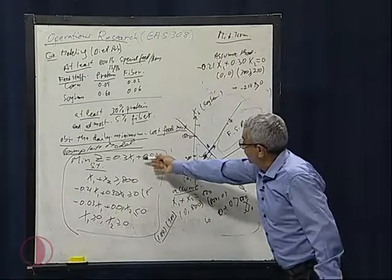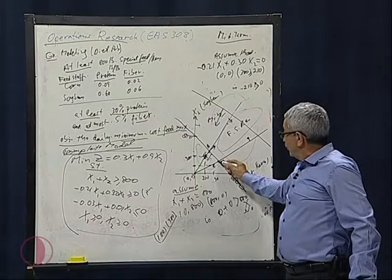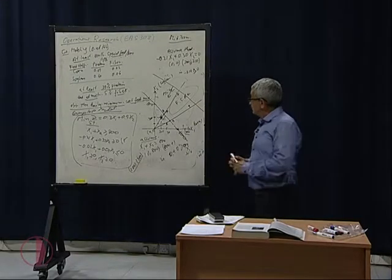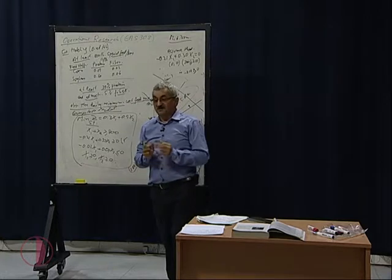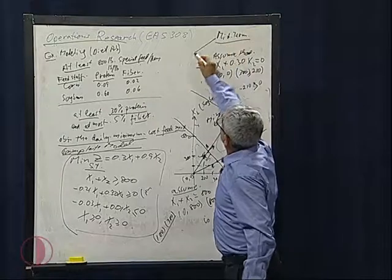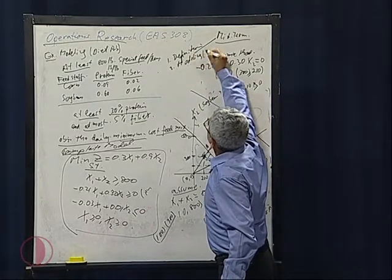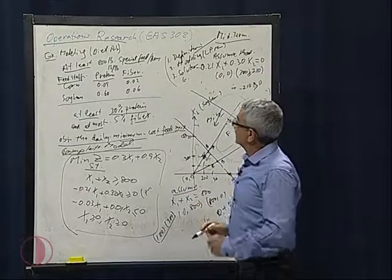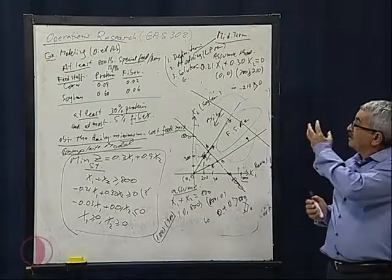For minimization problems, you draw the objective function line and shift it toward the origin. The last point nearest to the origin is the optimal solution. At the midterm exam you are responsible for: definitions and introduction to operations research, modeling of linear programming models, and solution using the graphical solution method. After the midterm we will cover the simplex method and transportation models. Thank you very much.